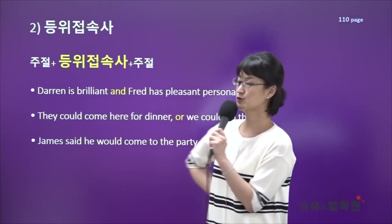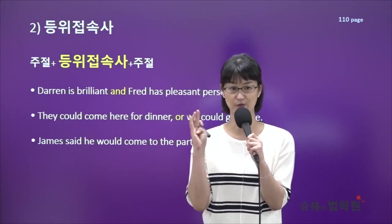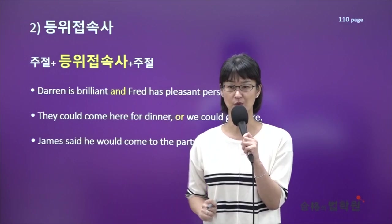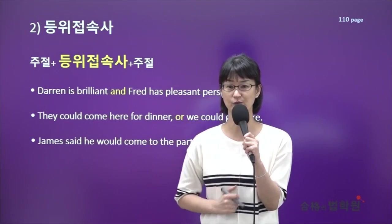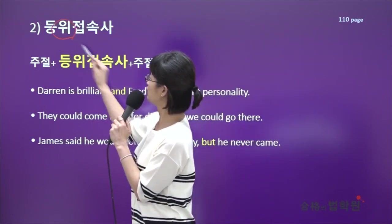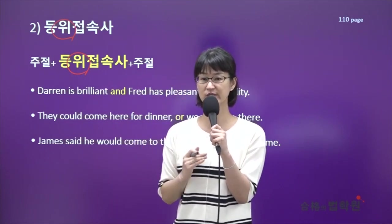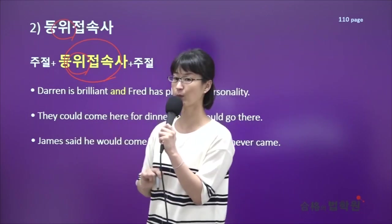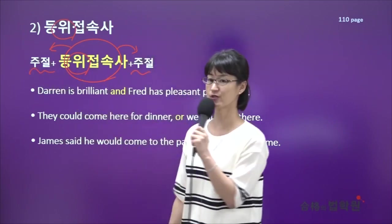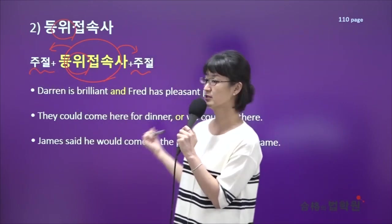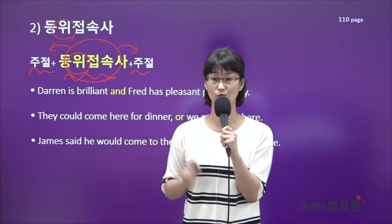두 번째 접속사의 종류는 등위접속사예요. 앞에서 했던 접속사는 종속접속사였죠. 그 밑에 명사절의 접속사, 형용사절의 접속사, 부사절의 접속사가 있었고, 지금 보시는 등위접속사는 앞에서 봤던 종속접속사와는 다른 성질을 갖고 있는 접속사예요. 등위이기 때문에 이 접속사는 본인이 연결하는 어떤 절에도 치우치지 않아요. 딱 중간에 무게중심 잡고 앞에 있는 절, 뒤에 있는 절 둘 다 주절로 연결을 해줘요. 등위접속사는 제일 중요한 게 절과 절 중간에만 와야지, 절대로 문장 맨 앞에는 못 들어갑니다.